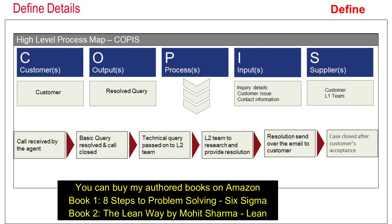The next thing the team did was create a high-level process map. Because there were cross-functional teams involved, everybody should be on the same page about the process. So a SIPOC was created. C stands for customer, O for output, P for process, I for input, and S for supplier. The supplier of information is the customer, and the inputs supplied are inquiry details, customer issue, or contact information of the customer, all provided by the L1 team to L2.